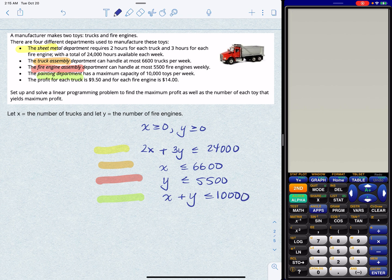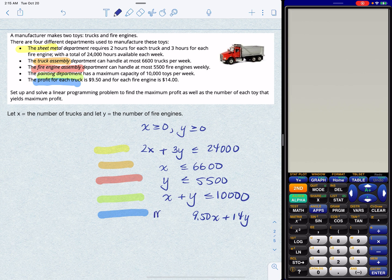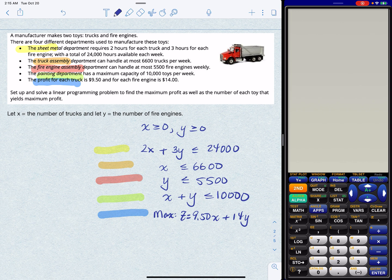And then last but certainly not least, the reason why we're here pretty much is for the profit. Now we are told that the profit is $9.50 per truck and $14 per engine. And we want to maximize this. So there's our objective function. And I'm going to call it z just like we always do. You can call it p for profit if you want to. Z is just pretty much the standard. So we're off and running pretty much.